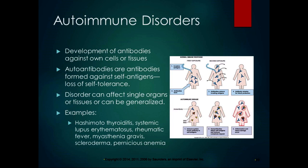Ones that affect single organs or tissues include Hashimoto's thyroiditis, which affects just the thyroid. Lupus, or systemic lupus erythematosus (SLE), affects more tissues in the body and is more generalized. Rheumatic fever, myasthenia gravis, scleroderma, pernicious anemia, and hyperthyroidism affect specific areas.